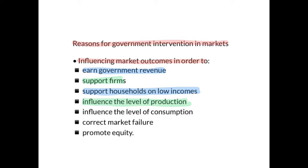The government may decide to tax a product in order to discourage overproduction. Governments can also interfere to influence the level of consumption — maybe it's a harmful product being overconsumed, like cigarettes, or a beneficial product being under-consumed. In that case, the government might interfere to encourage more consumption, perhaps by subsidizing the product. Governments sometimes interfere to correct market failure, which occurs when markets lead to the overallocation or underallocation of resources.